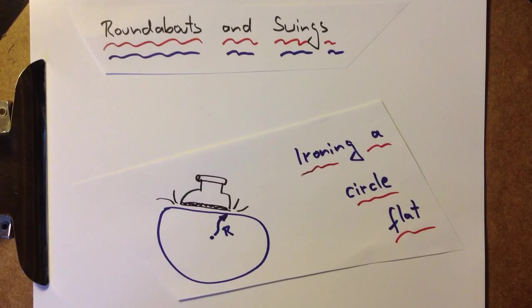Oscillations are all about ironing a circle flat. Let's see how we can understand this.